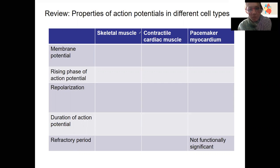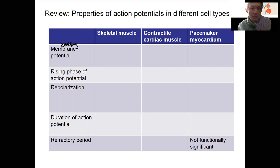There are three types of muscle tissue we've talked about, and I want you to tell me the membrane potential — this should say resting. What triggers the rising phase? Tell me about repolarization, the duration, and the refractory period as best you can.